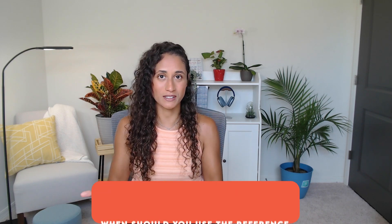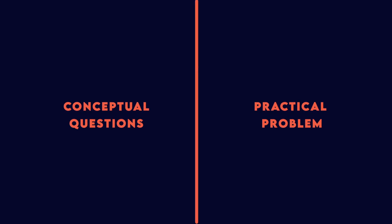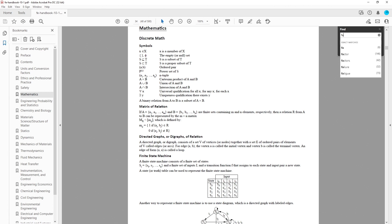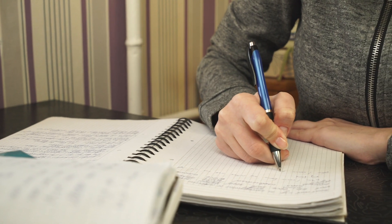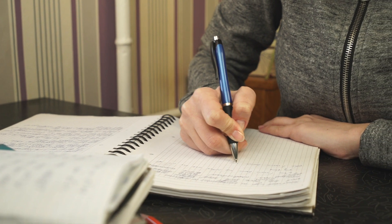Now that you know what the reference handbook is, the next question is when should you use it? You should use the reference handbook the whole time you're studying for the FE exam. The FE exam has two types of questions: conceptual questions and practical problems. When you are going over concepts, look up the keywords in the reference manual and check if those concepts are mentioned. If they're not, write them down and try to remember them for your exam.